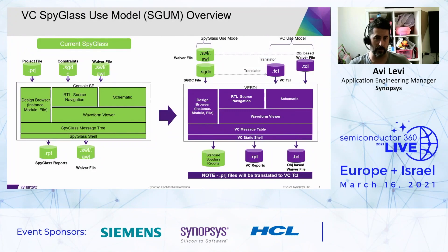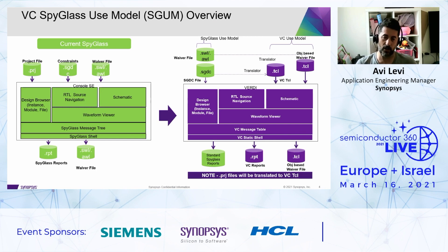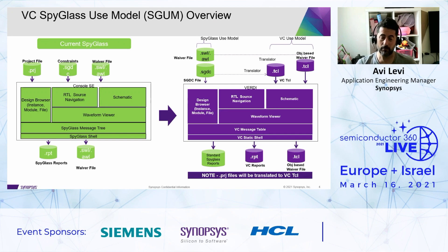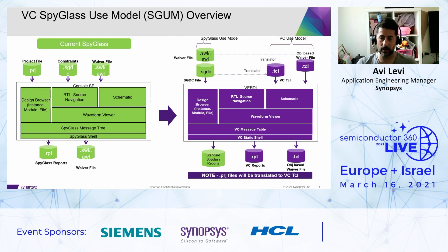Today, most of our customers are still using Spyglass. When coming to migrate, they would like an easy migration — they don't want to start everything from scratch or rewrite their projects and constraints. So we allow them in a push-button flow to take their Spyglass project with SGDC constraints, project files, and waiver files, and feed it into the VC Spyglass platform and get VC-style reporting as output. You can work in either of two modes: take the Spyglass project every time as the starting point, or do this migration once and then develop everything on top of the generated VC setup — which is the preferred model we recommend.